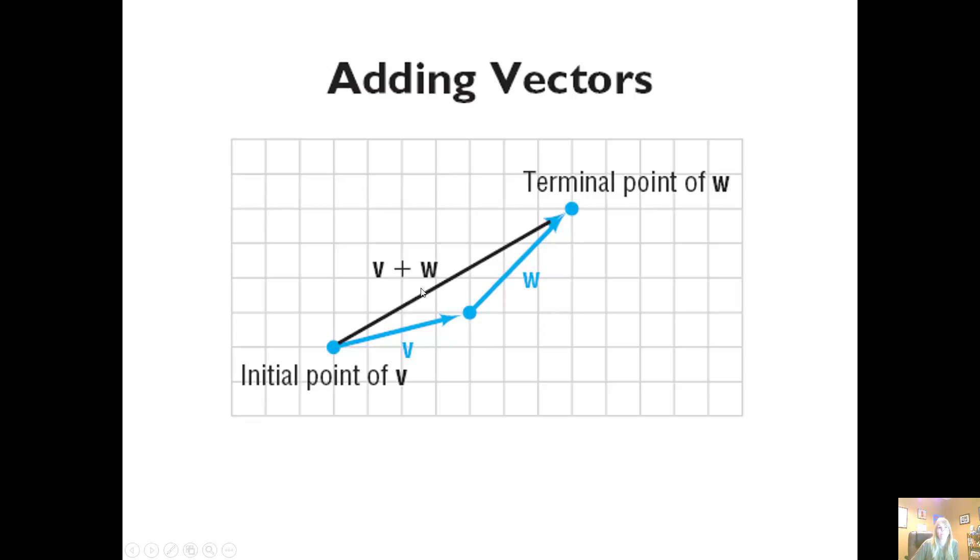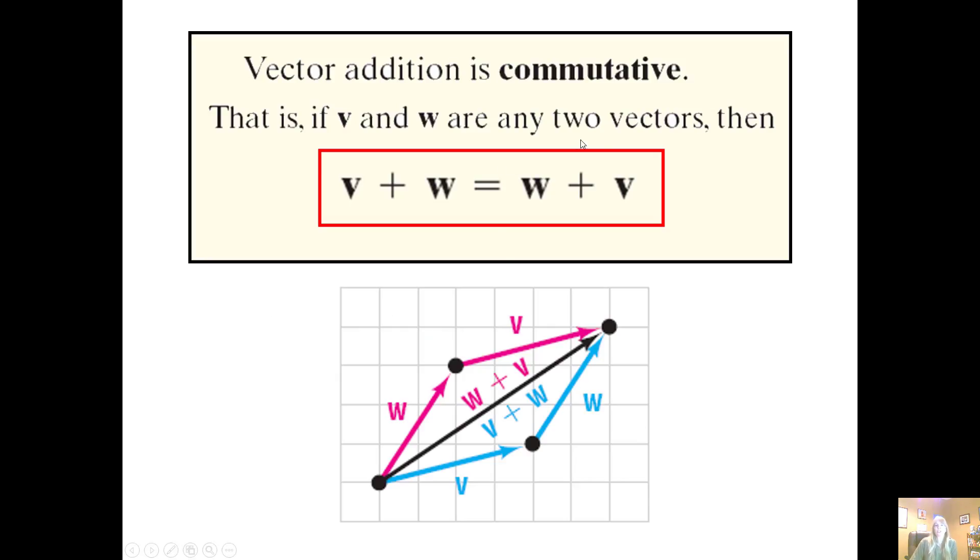If I want to add vectors, I have my initial point, go to my magnitude of v, then my magnitude of w, and adding these two gives me a new vector. Vector addition is commutative, so v plus w is the same as w plus v. I get the same vector.